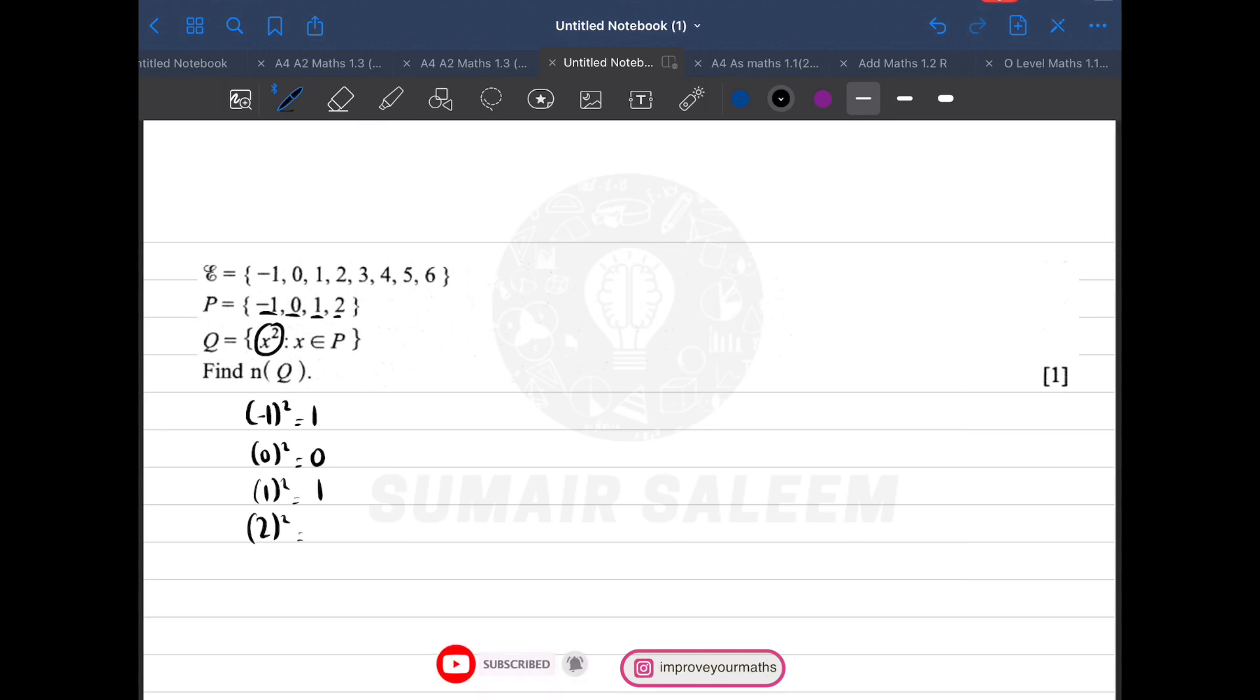You need to write n(Q), so let's write down set Q first. It's going to be {0, 1, 4}. Will you write 1 twice? No, because sets P and Q both should be from universal set, and how many ones are present in universal set? Only one. Now how will you get n(Q)? n(Q) will be 3.